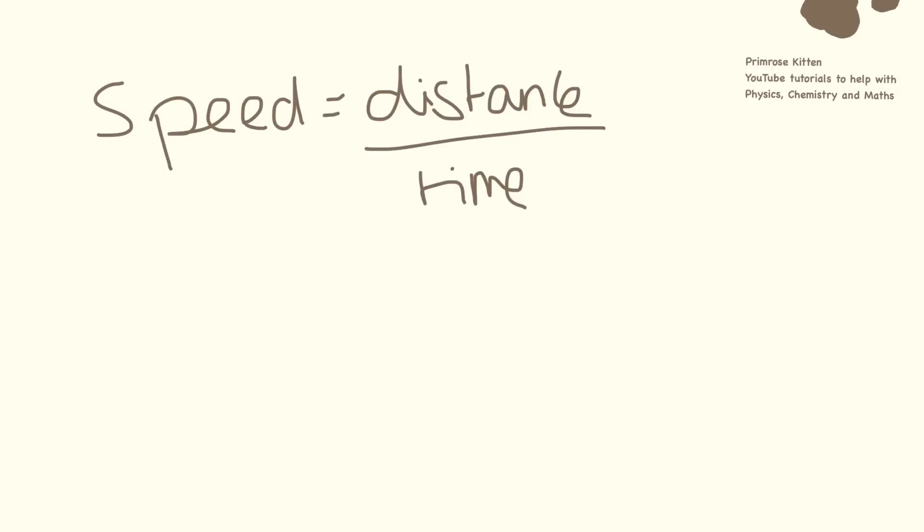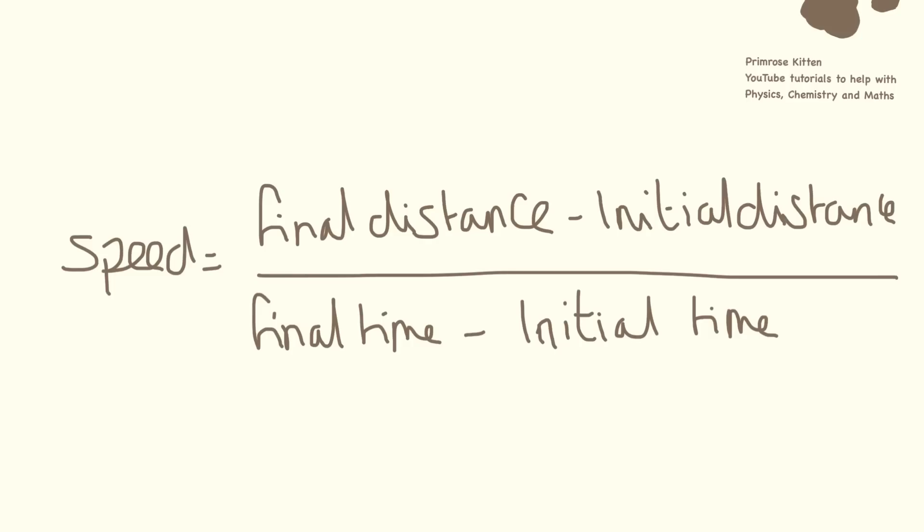We know speed equals distance over time. For your graph, we need to make it a touch more sophisticated and say that speed equals the final distance minus the initial distance, divided by the final time minus the initial time. Now, I'm going to be really picky about this. In your exam, in your homework, I want you to lay it out in exactly this format. The reason I want you to lay it out in this format is because it's easier for you to see if you've made a mistake and then correct it. And if you can't see the mistake and correct it, it's easier for the examiner to work out where you've gone wrong and then potentially carry your error forward. That is a thing we're allowed to do. And then give you the marks later on. So always lay your work out as clearly as possible.